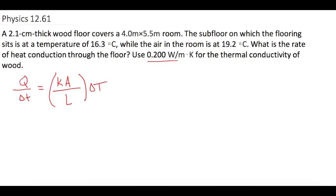So they tell us right here that the thermal conductivity constant that we're going to use, K, is 0.2 watts per meter Kelvin. Then we need to find the cross-sectional area. So we have a wood floor here covering a room. They say it's 4 meters by 5.5 meters. So A is equal to 22 square meters.